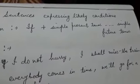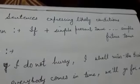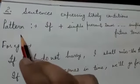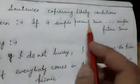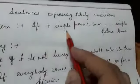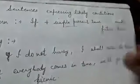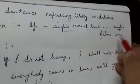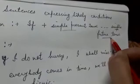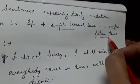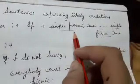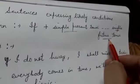Next is the second type: sentences expressing likely conditions. Likely conditions means kuch aisa ho sakta hai. The pattern is: if clause mein simple present tense, aur main clause mein simple future tense — if plus simple present tense in the if clause, and simple future tense in the main clause.